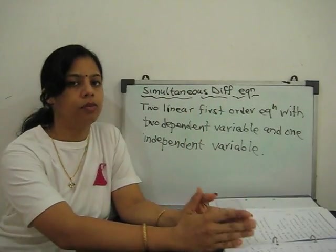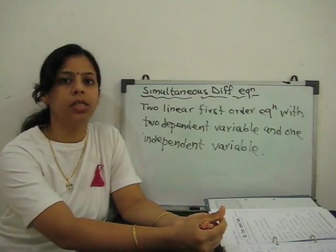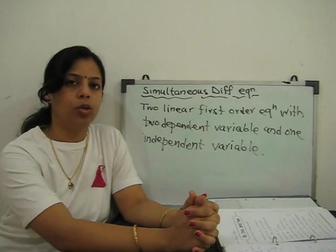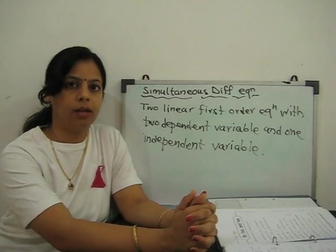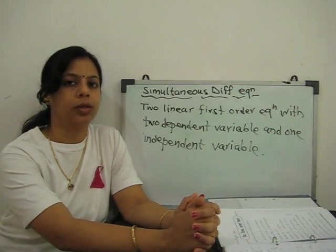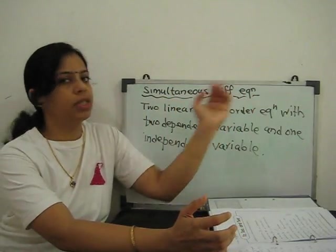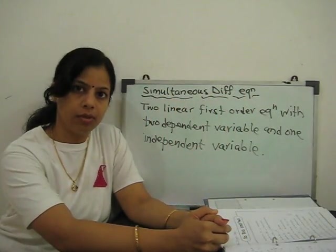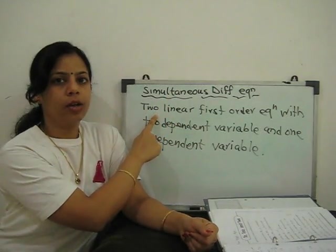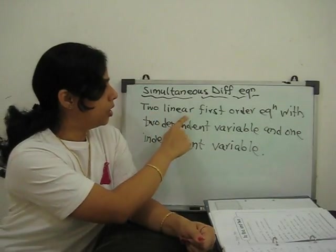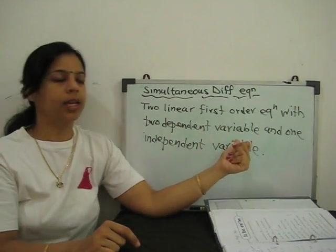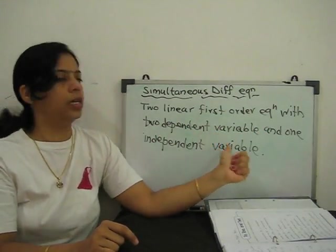Simultaneous equations you already solved. Simultaneous means if you have two equations, both together you can solve them with the same variables and find out the value of the variables — that is called a simultaneous equation. So simultaneous differential equations means simultaneous equations that include derivatives.